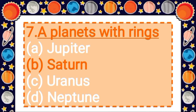Next question: a planet with rings. Option A: Jupiter, Option B: Saturn, Option C: Uranus, Option D: Neptune. Answer is option B, Saturn — a planet with rings is Saturn.